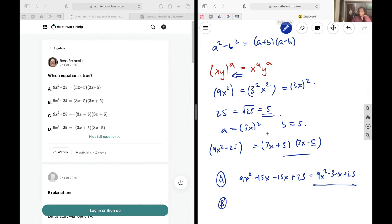B, you can see we have 3x minus 5 and 3x plus 5. If you wanted to expand that out, you would get 9x squared minus 15x plus 15x minus 25. These two would cancel, leaving me with 9x squared minus 25, which is exactly what I wanted.